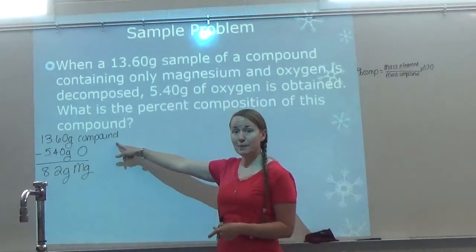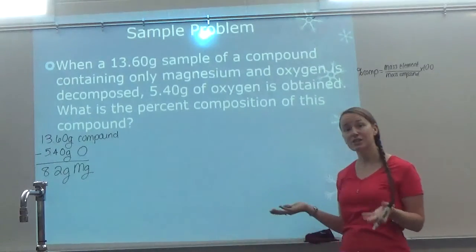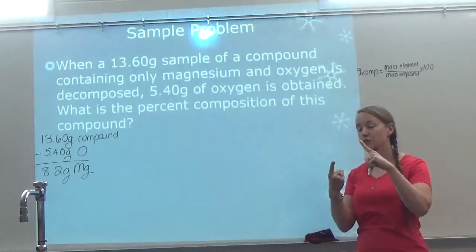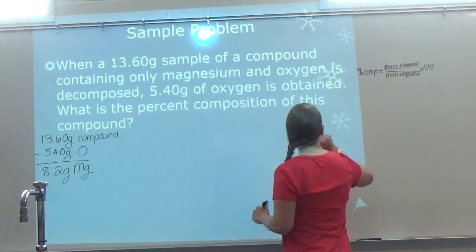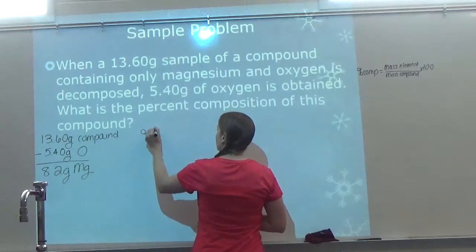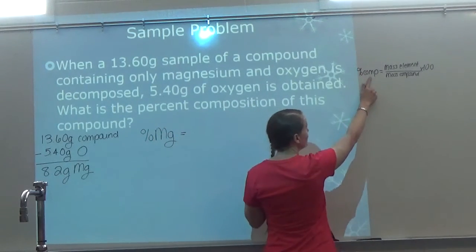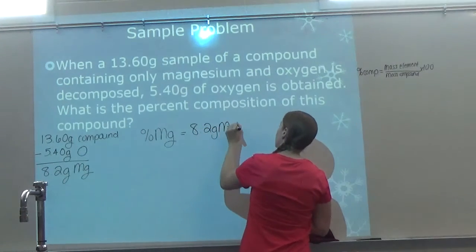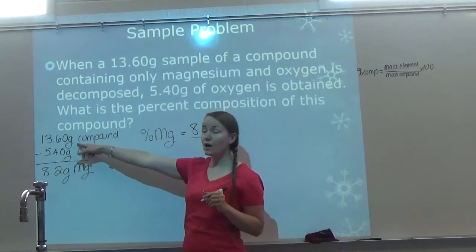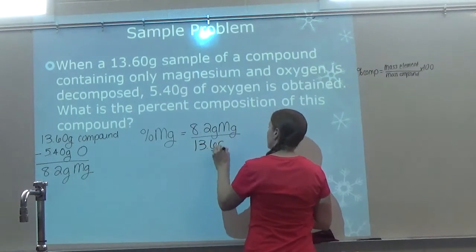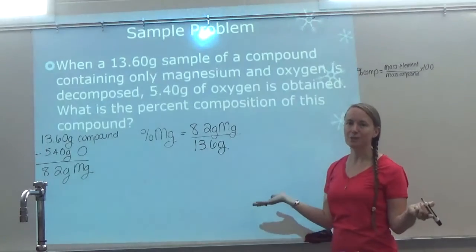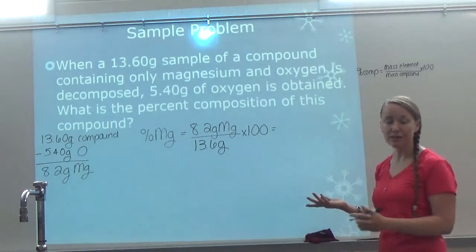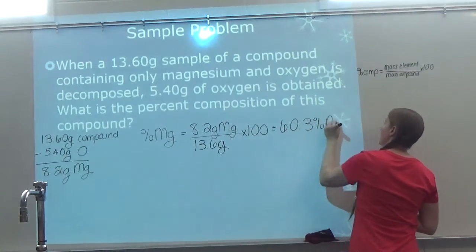Now I know my whole compound, how much oxygen, and how much magnesium, so I'm ready to start the problem. When you ask for percent composition, unless it specifies a particular element, you have to do it for each element involved — one for magnesium and one for oxygen. For magnesium: percent composition equals mass of the element, which is 8.2 grams of magnesium, over the mass of the whole compound, 13.6 grams, times 100. That gives us 60.3% magnesium.